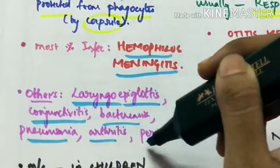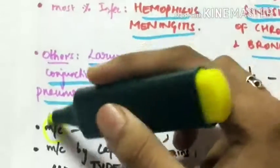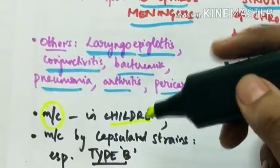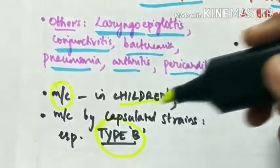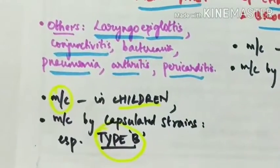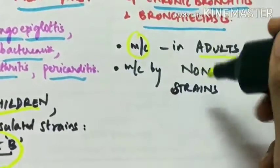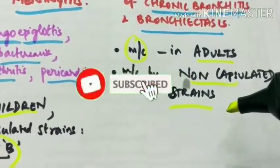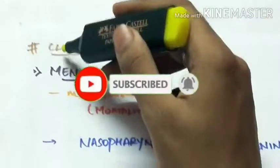The invasive pathogenesis occurs most commonly in children and it is most commonly by type B Haemophilus influenzae. Whereas non-invasive is most common in adults and it is commonly caused by non-capsulated strains. This is about the pathogenicity of Haemophilus influenzae.